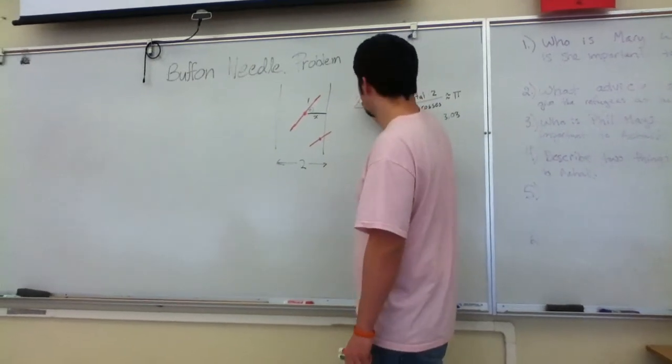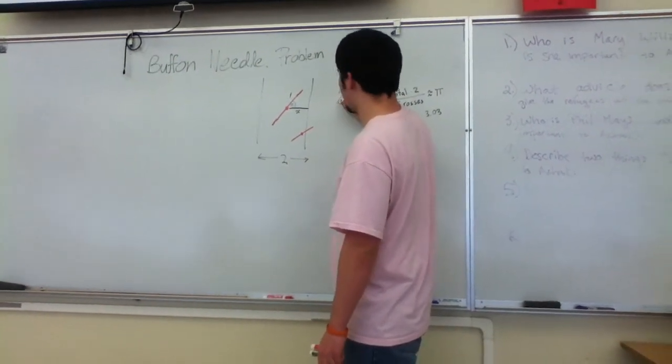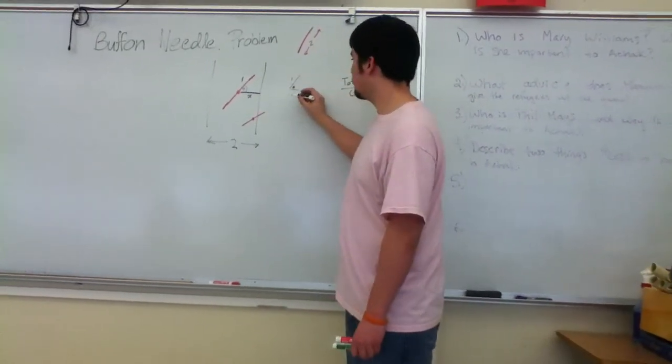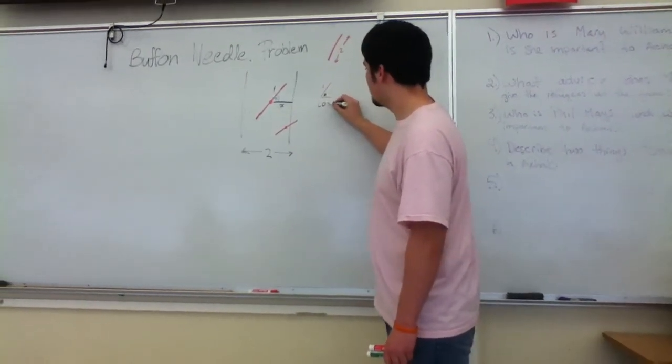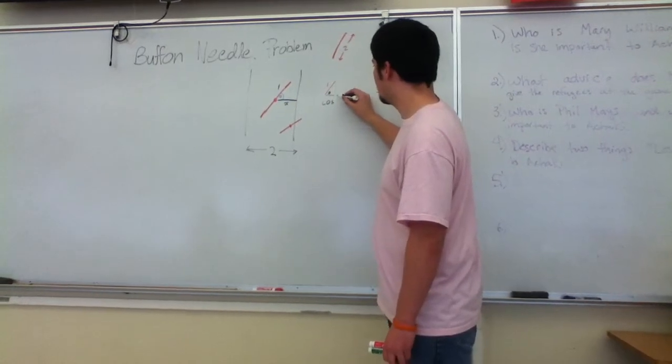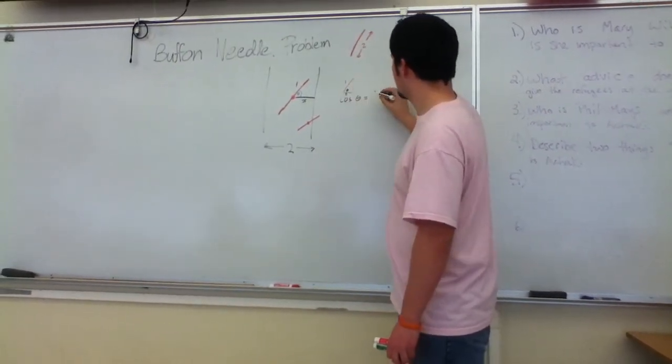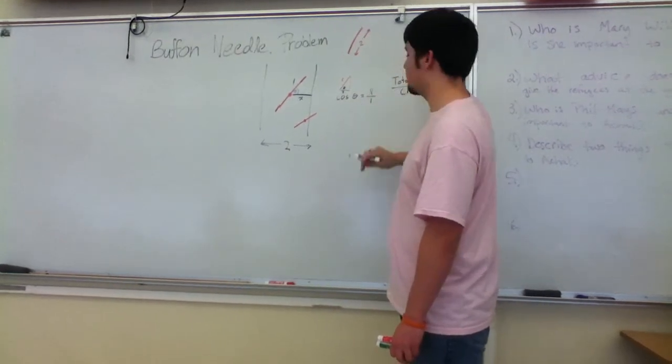We need to know how far it sticks out. That would be the sine of theta. We'll call this l. Sine of theta equals l over one, or just l.